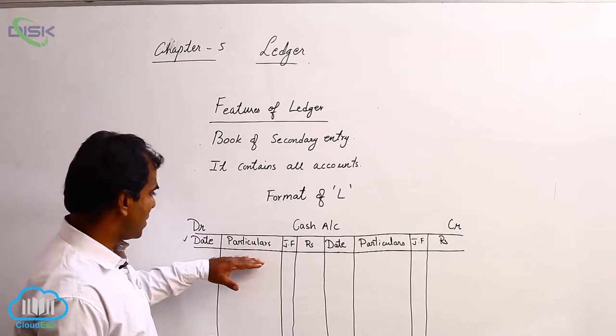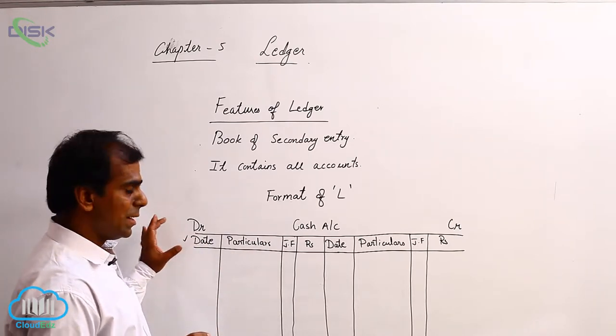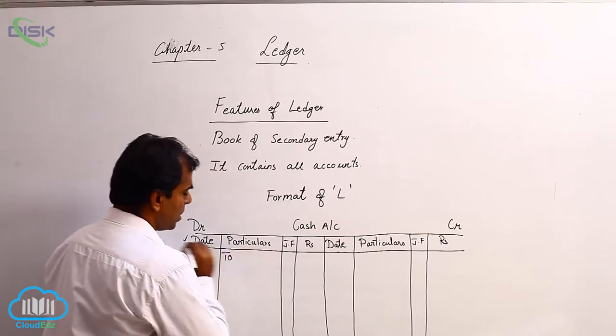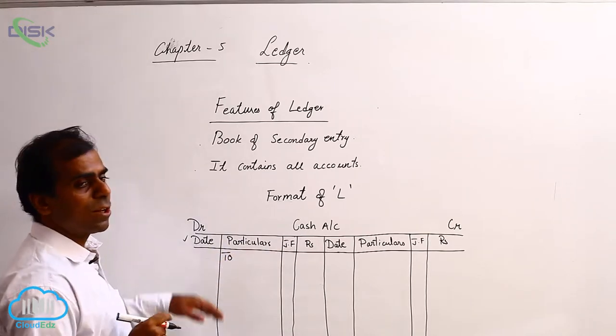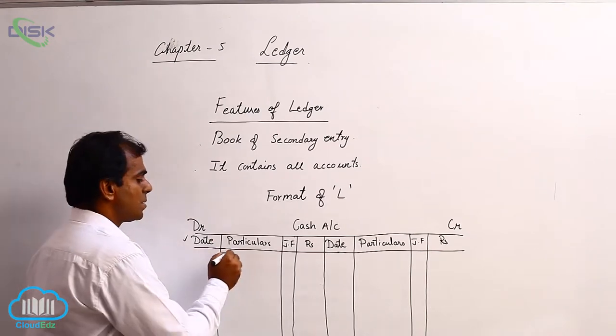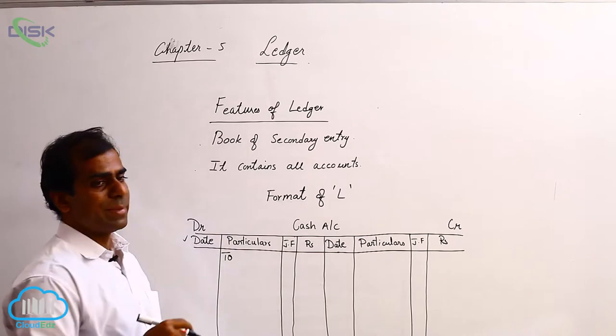In particulars column, usually, we put 'to' first. This is a constant, it never changes. So, the word 'to' is constant on the debit side.